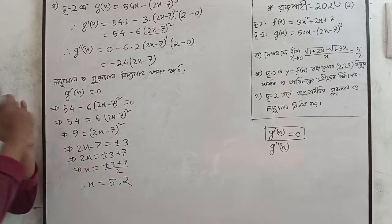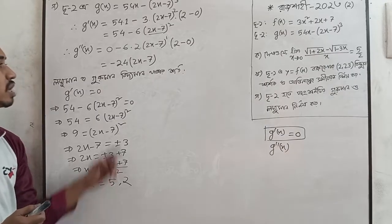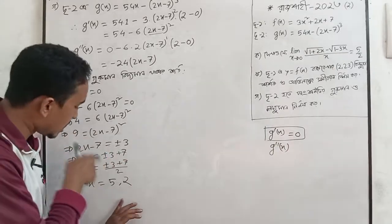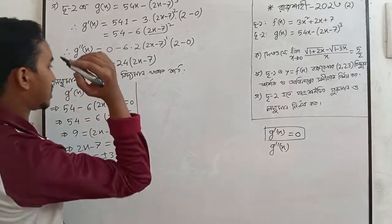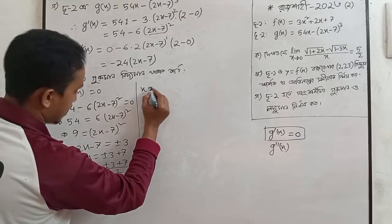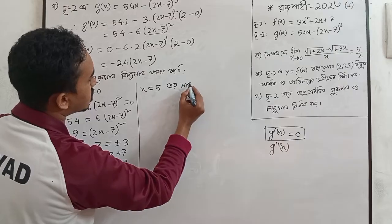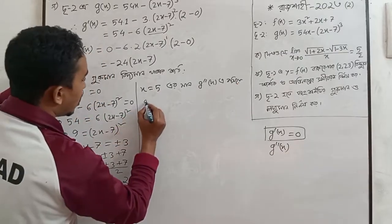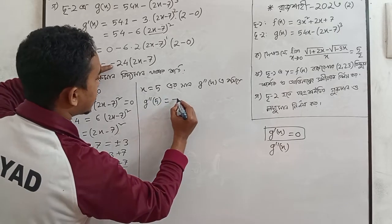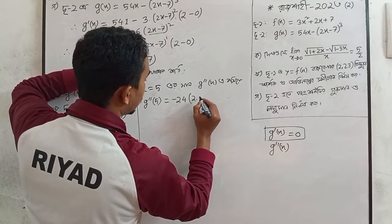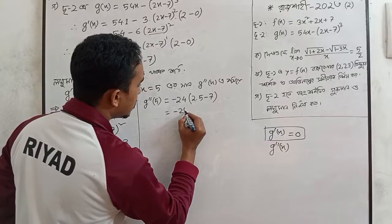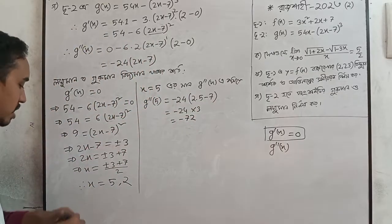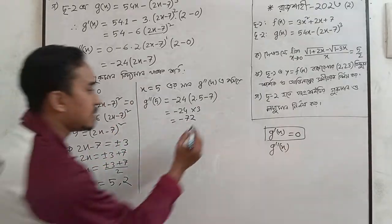Now we know x equals 0 from the derivative. The meaning of x: we have x equals 5 or x equals 2. So we will take the first step. At x equals 5: z double dash equals minus 24 times 2 times 5 minus 7, which gives minus 24 times 3 equals minus 72, or we use x minus 22.